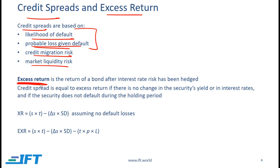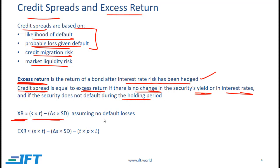Excess return is the return of a bond after interest rate risk has been hedged. The credit spread equals the excess return if there is no change in a security's yield or in interest rates and if the security does not default during the holding period. The formula for expected excess return — assuming potential default losses — is: spread times T, minus the change in spread times spread duration, minus T times the probability of default times the loss given default. T is the time period in years.